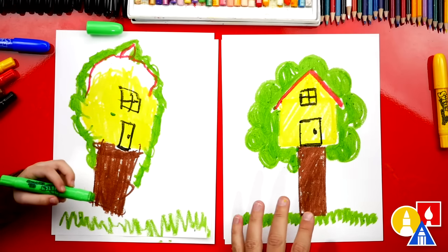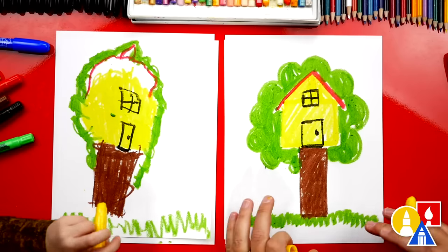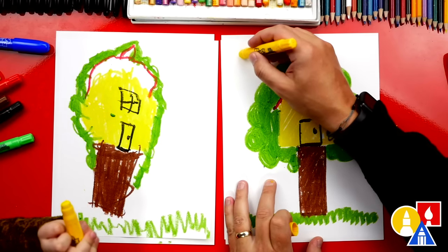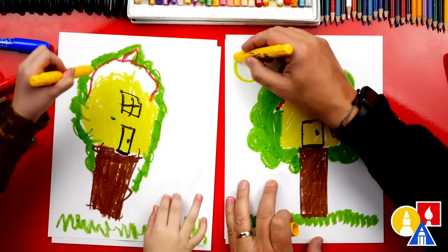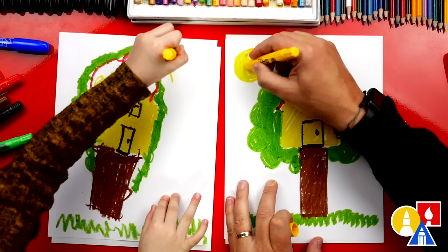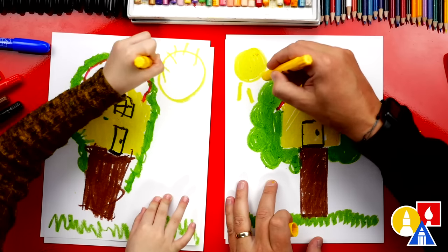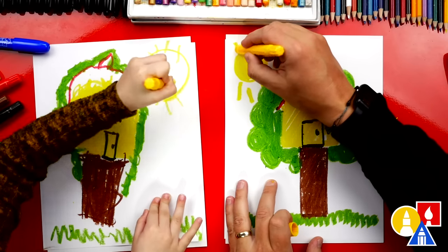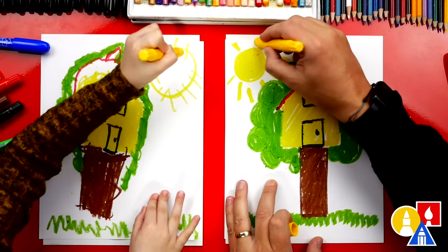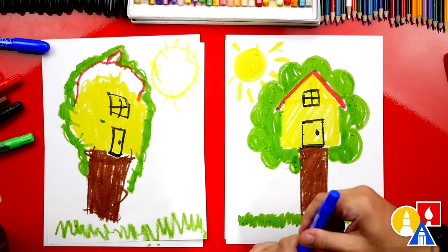What should we draw next, Libby? A sun. A sun. Okay, let's do it. We're going to switch to our yellow. Let's draw a circle up here in the top left. Or you could draw it right here too. Top right. Because you have more room on that side. You guys can change your drawings any way you want. Oh, I like that. You add a little sun rays coming off of your sun. You guys can add birds in your tree. You could even add, oh, I'm going to draw clouds.